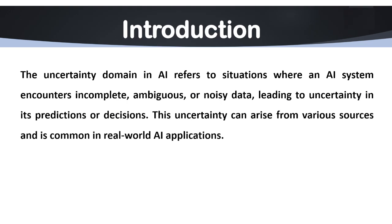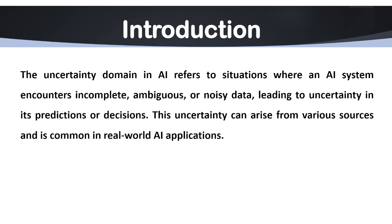First of all, I would like to discuss the meaning of uncertainty domain in AI. Basically, uncertainty domain in AI refers to a situation where an artificial intelligent system encounters incomplete, ambiguous, or noisy data, leading to uncertainty in its predictions or decisions. This is the uncertainty domain in AI.